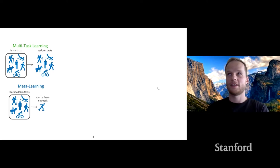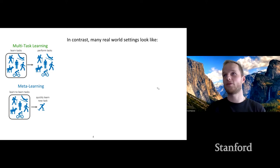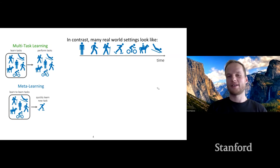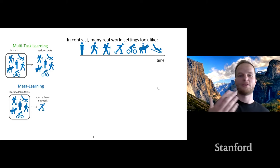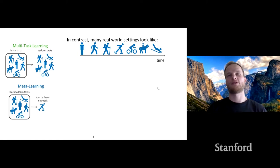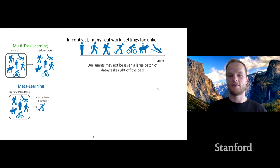In many real-world settings, the setting is actually a little different. Rather than having a batch of data or tasks to pre-train on — either in multitask or meta-learning — tasks are not given up front. Instead, they come in sequence. For instance, we need to learn how to walk first, then how to run, and we keep learning new tasks in sequence rather than having a big batch of data and tasks up front.